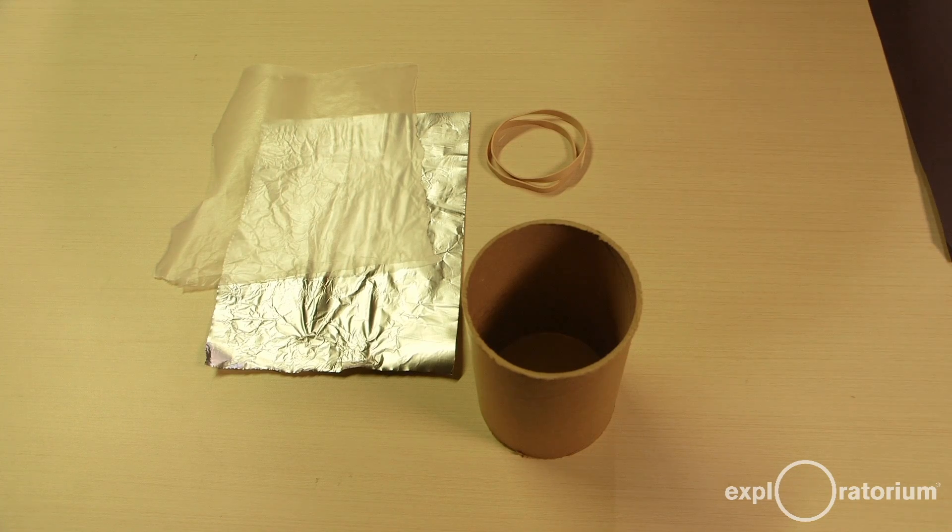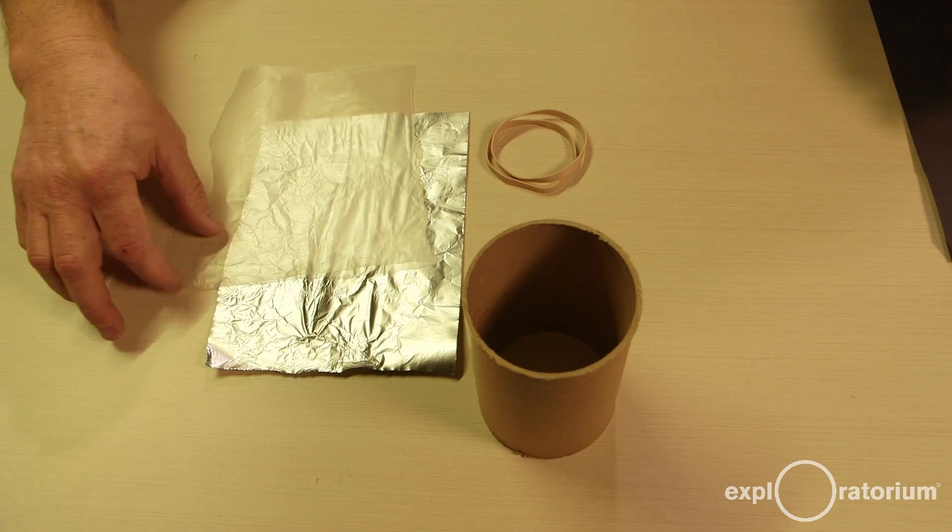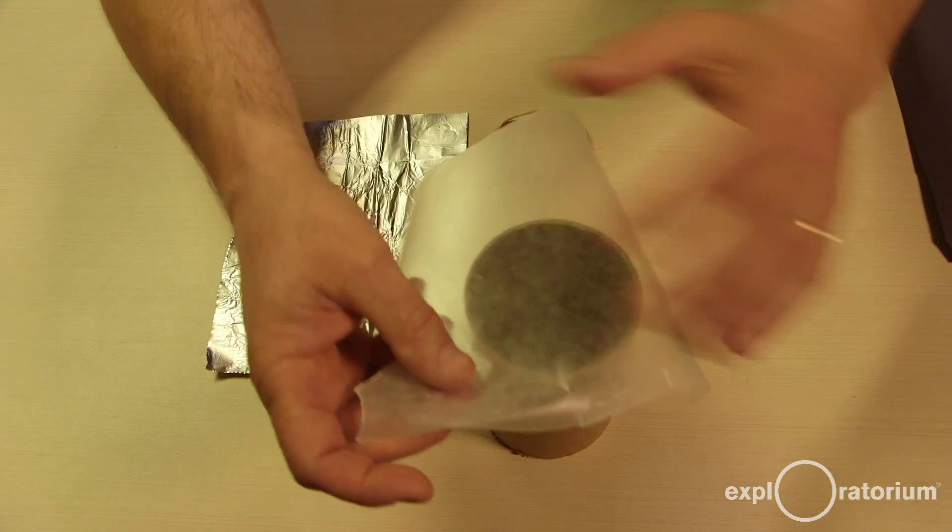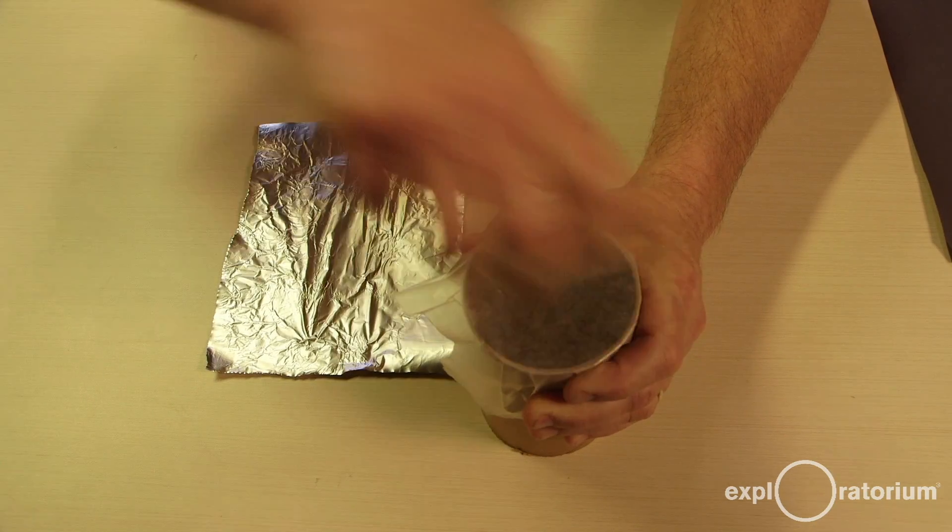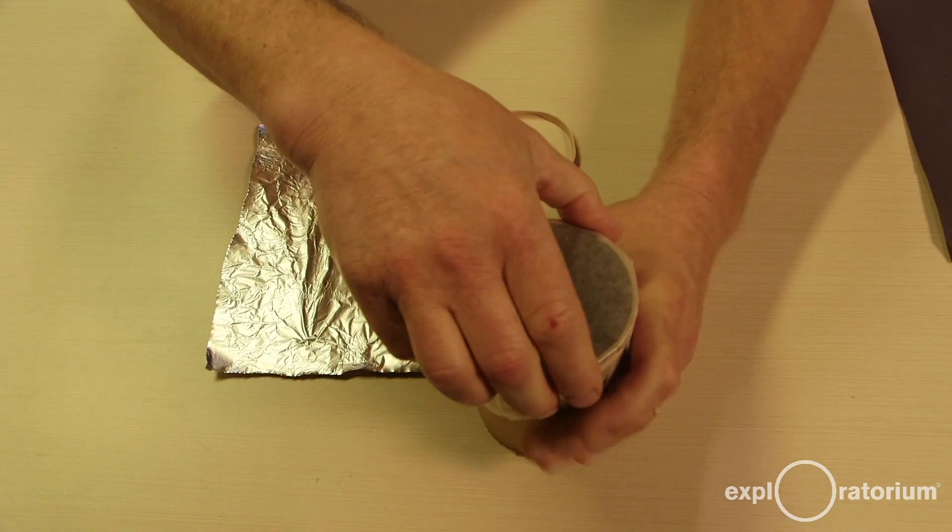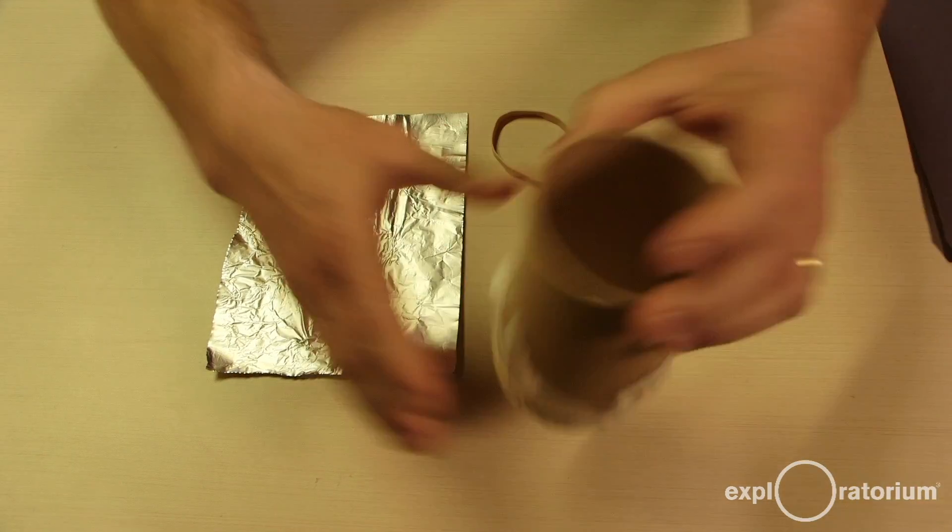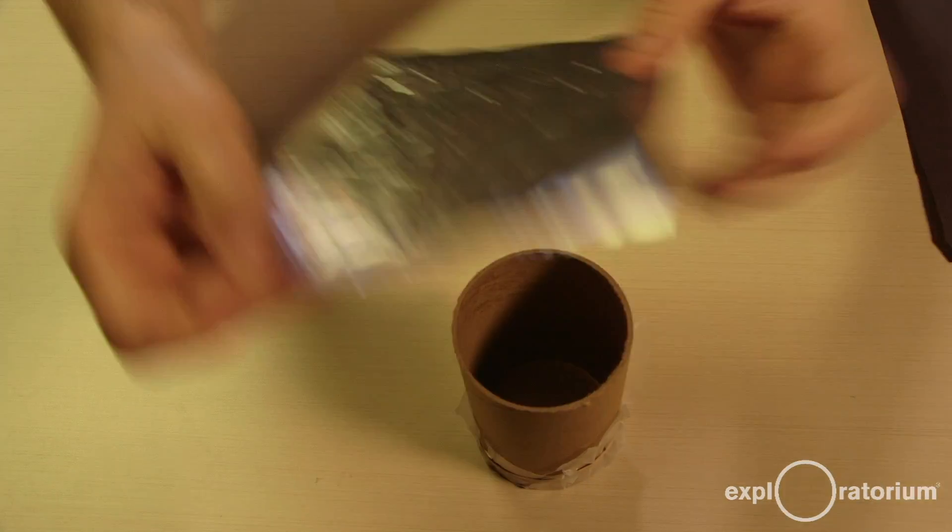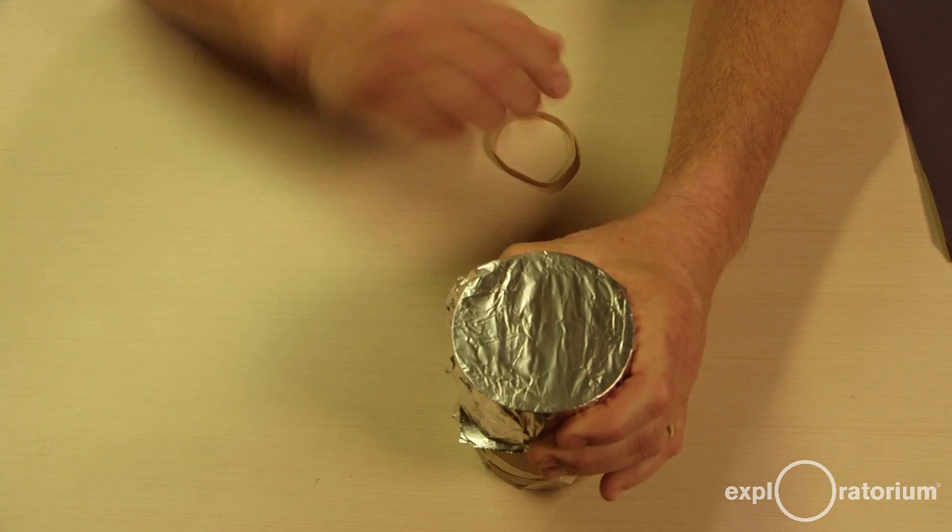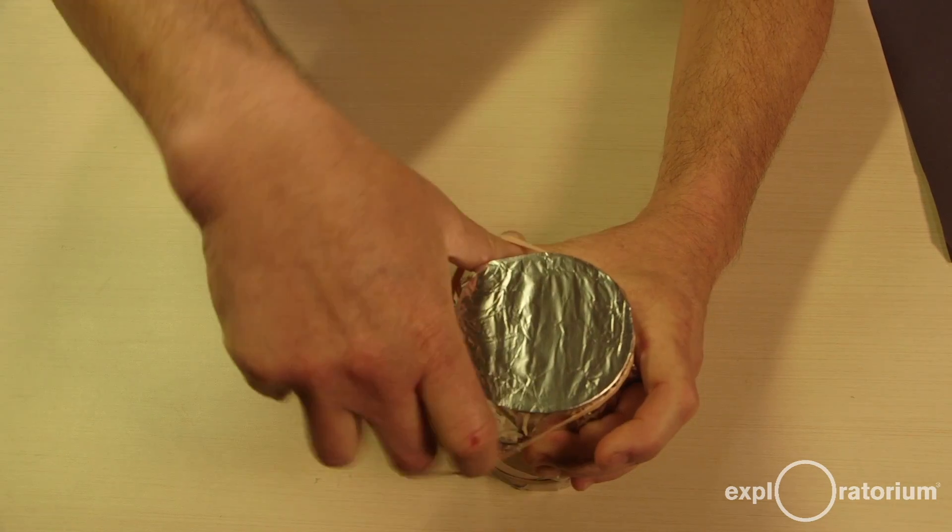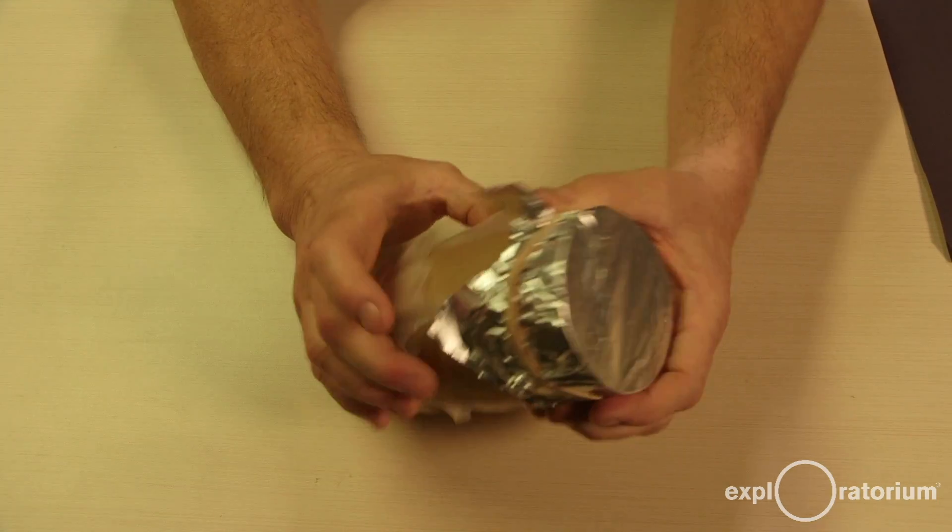Here's how you build your viewing device. First, you're going to take your wax paper, put it over one end, and make sure the wax paper is cut just a little bit larger than your opening on your cardboard tube. Put your rubber band around it to keep it secured. Next, put your aluminum foil, which is also cut just to the right size, on the opposite side. Put your rubber band around that, and your device is ready to go.